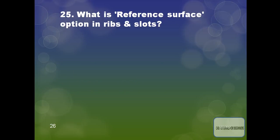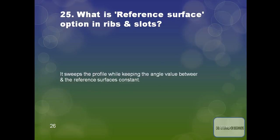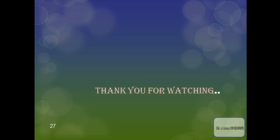What is the Reference Surface option in ribs and slots? It sweeps the profile while keeping the angle value between the axis and the reference surface constant. Thank you for watching — please like and subscribe for more videos.